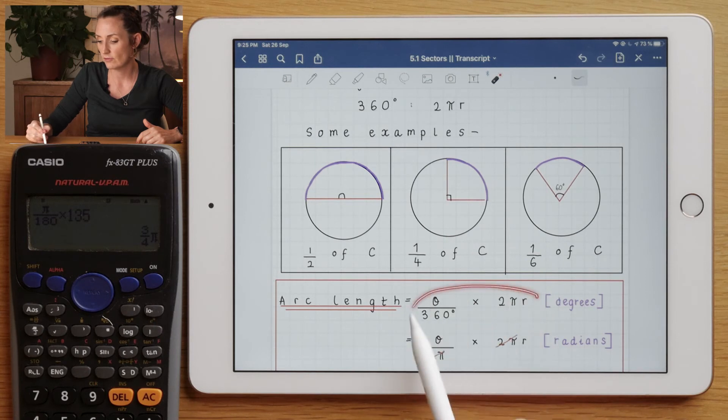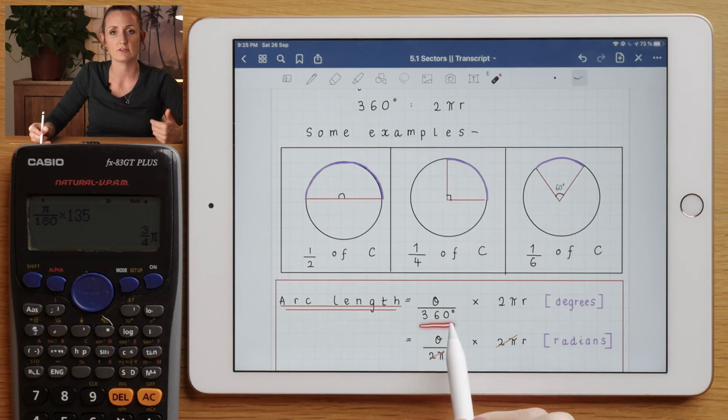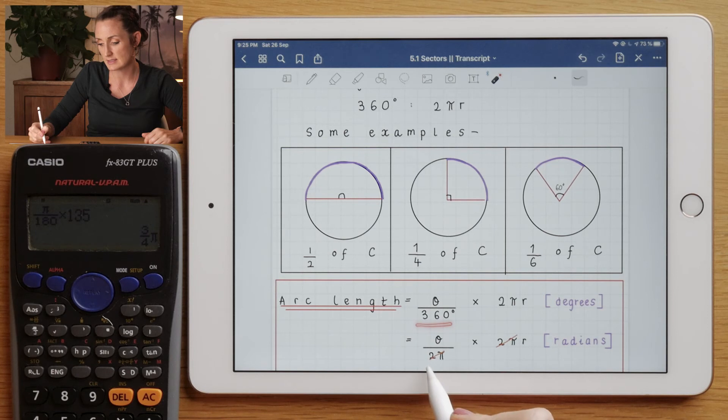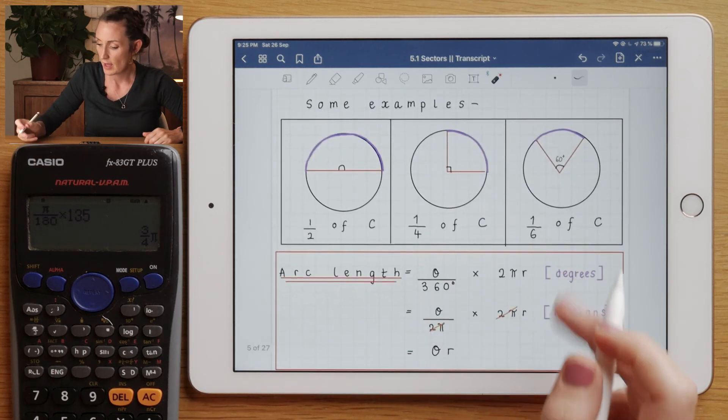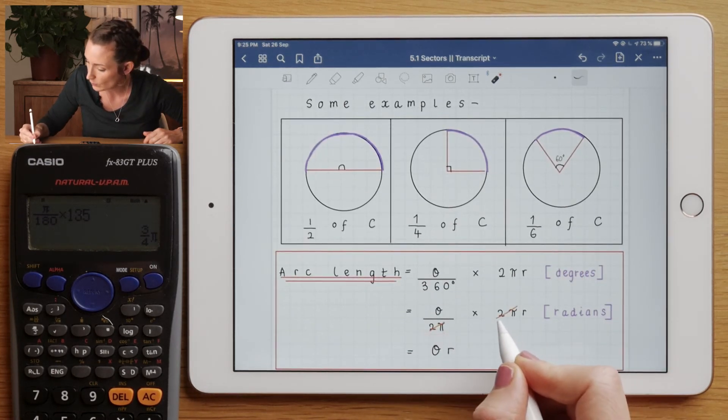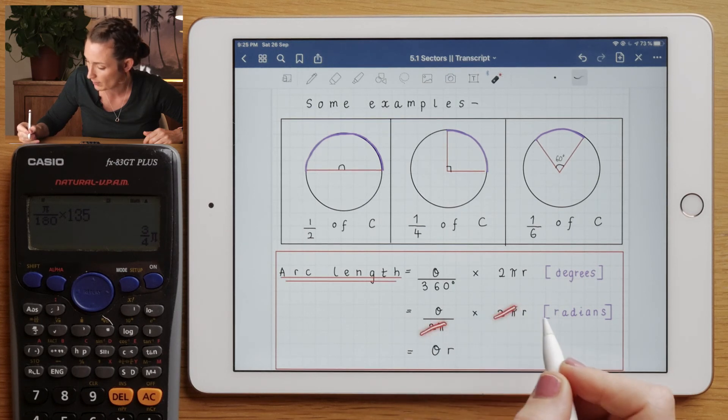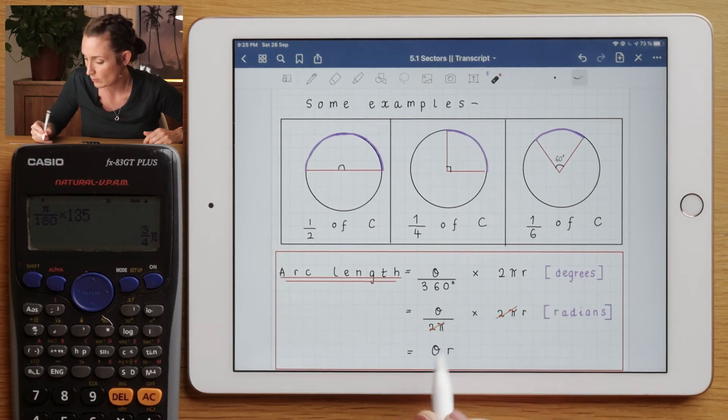This is the formula if you're going to work in degrees. If you'd like to work in radians, we shouldn't work with 360° because that's degrees. But we know that 360° is the same as 2π radians. And if we substitute 2π here, we can cancel this 2π with this 2π, and we end up with the formula for θ times r.